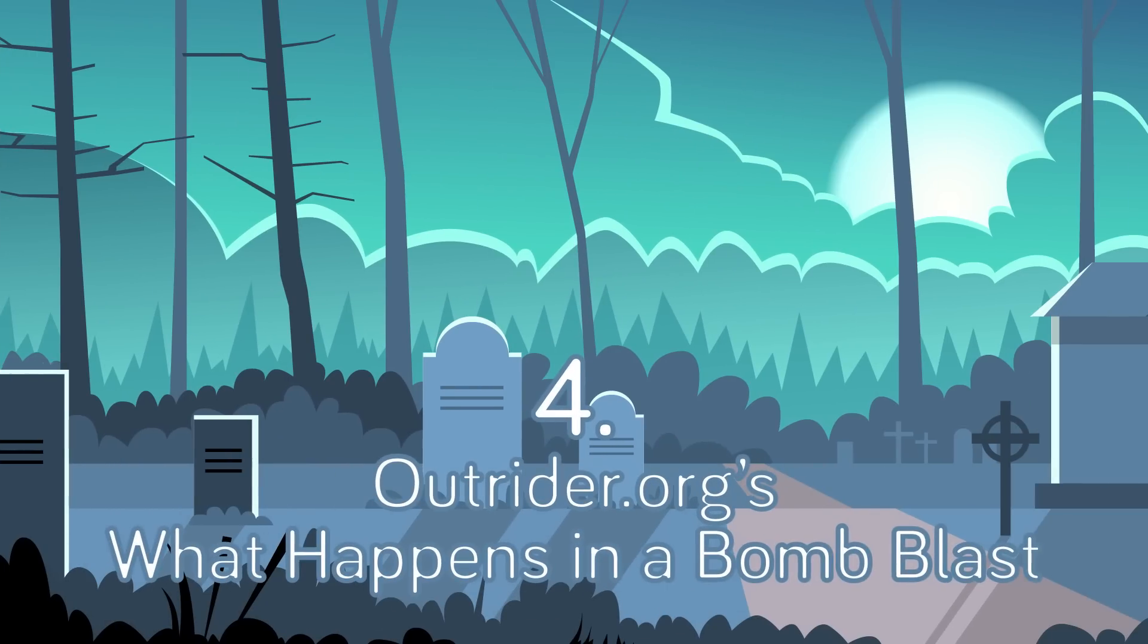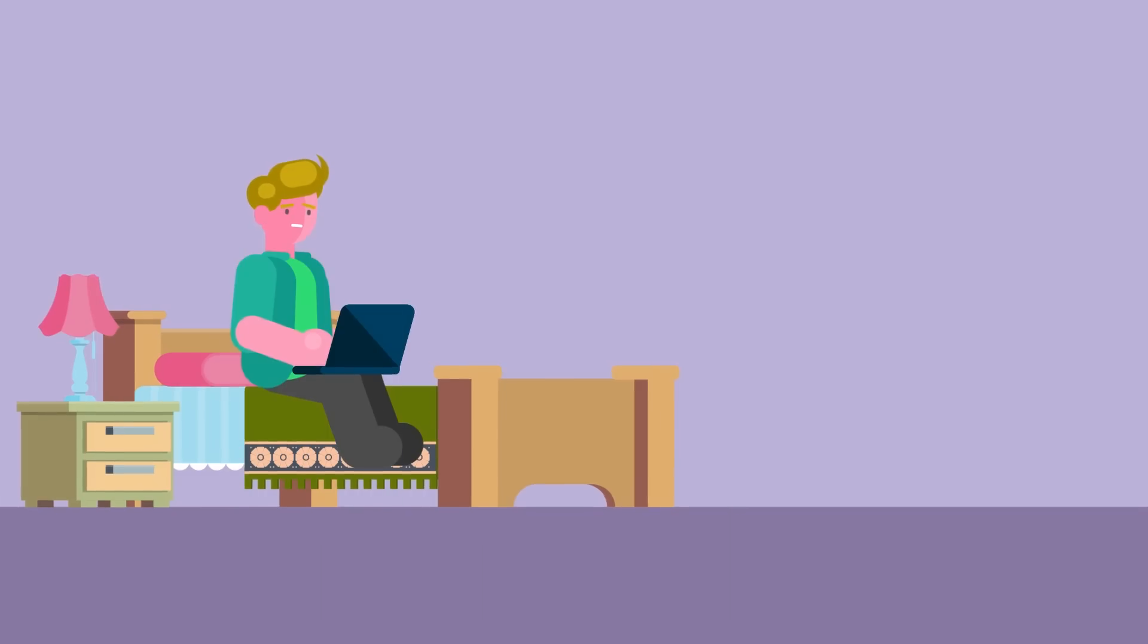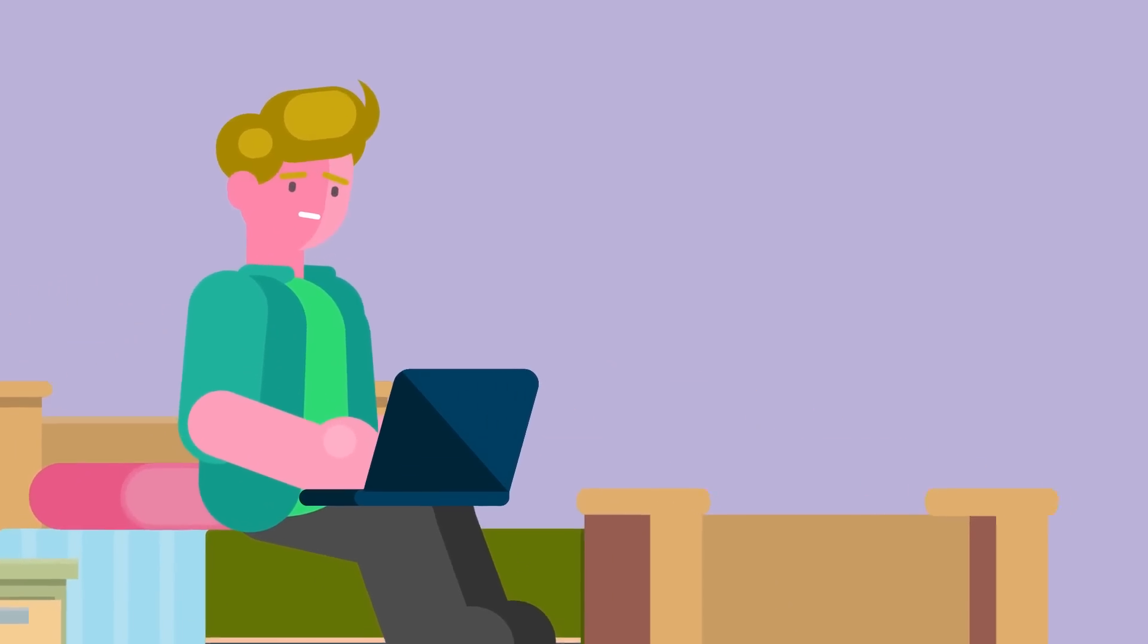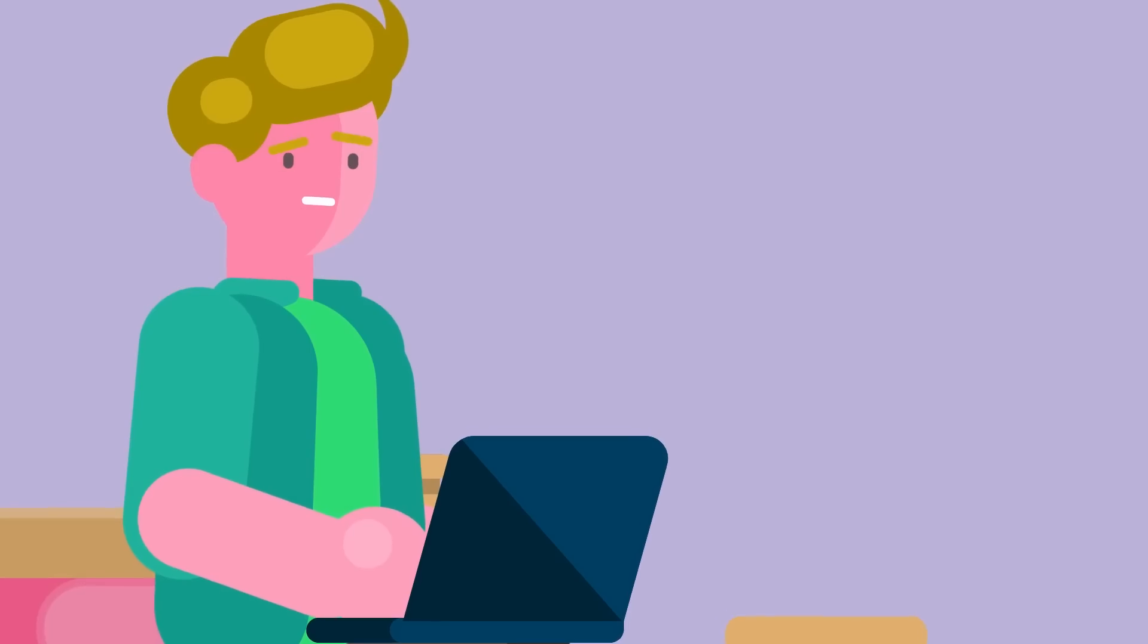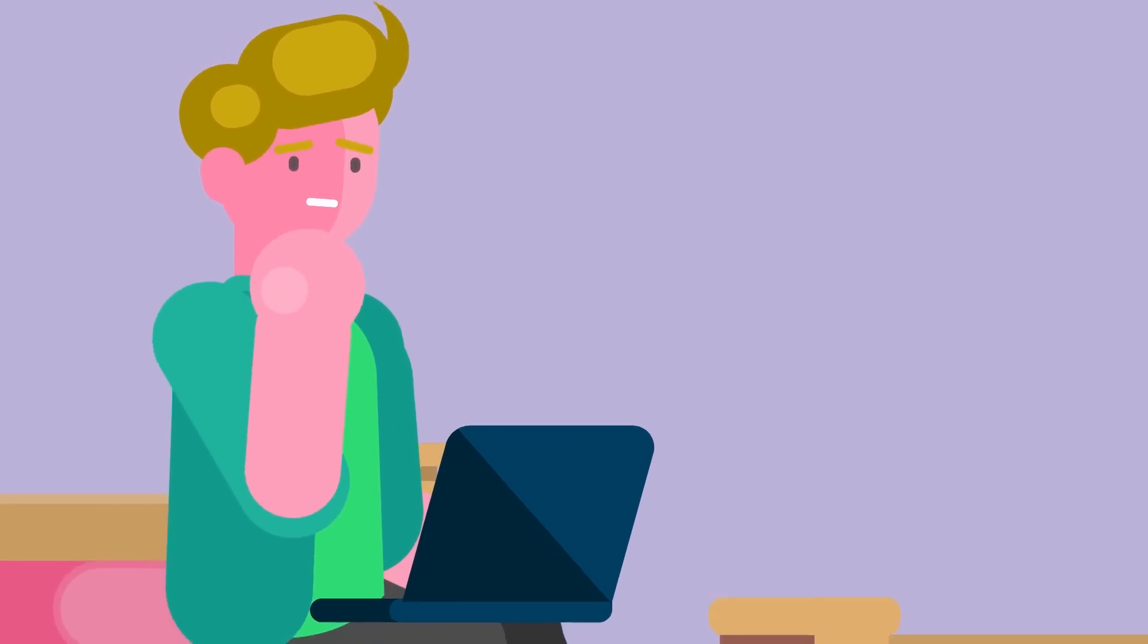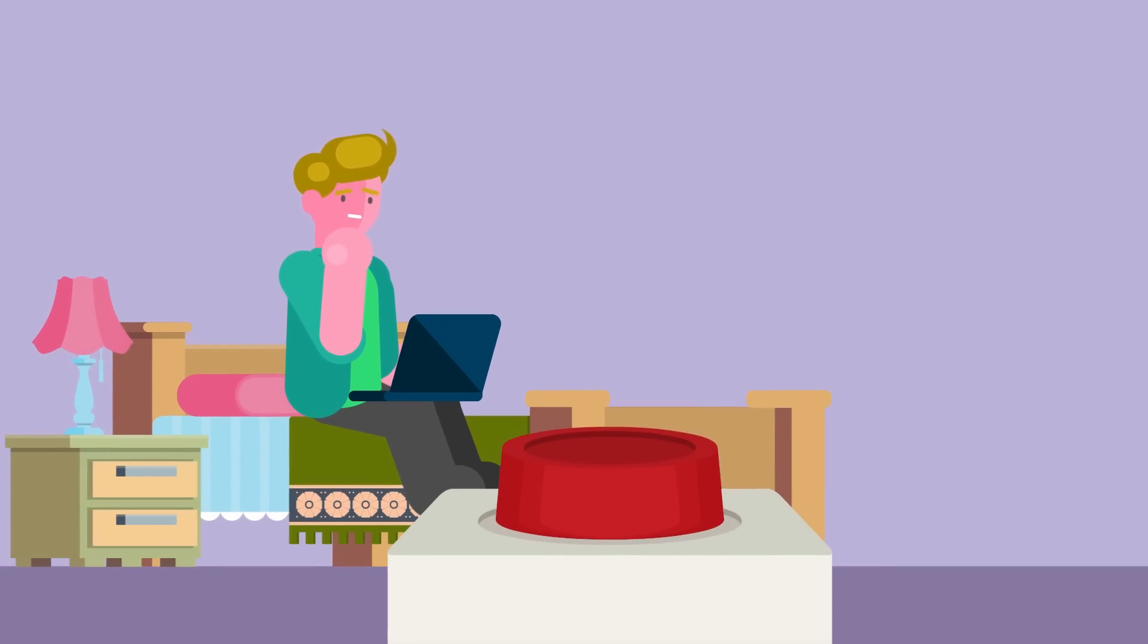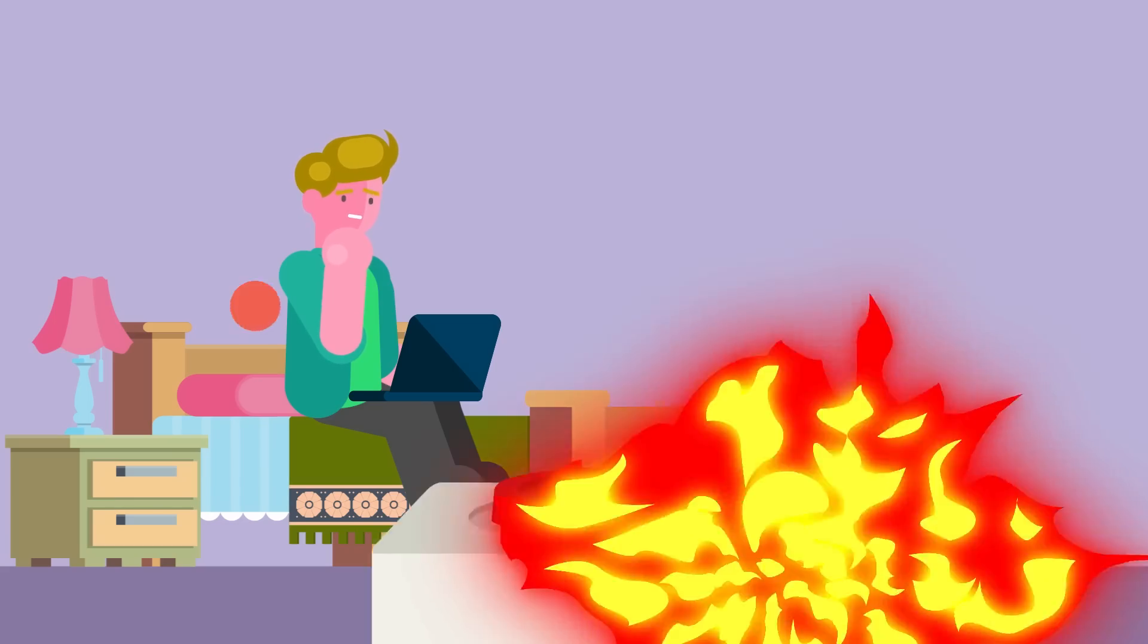Number 4: Outrider.org's What Happens in a Bomb Blast? If our last website didn't hit close enough to home, we have an even freakier one for you here. When you go to the Outrider.org website and click on the Nuclear Weapons Challenge and then on the question, What Happens in a Bomb Blast?, you'll get some seriously scary information. Select the Use My Location button on the following screen and you'll discover what exactly would take place if a nuclear bomb detonated right where you are sitting. How's that for comforting?